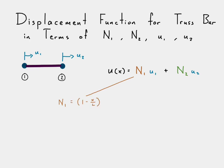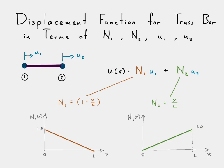There is the shape function for node 1 and how it varies throughout the element. There is our shape function for node 2 and how it varies throughout the element.